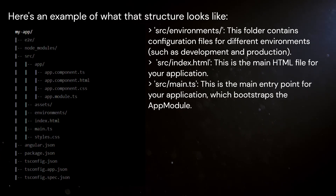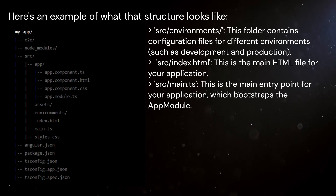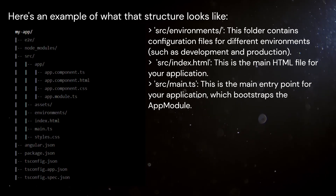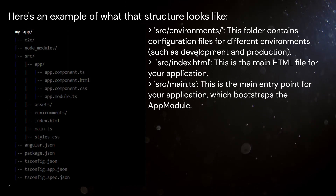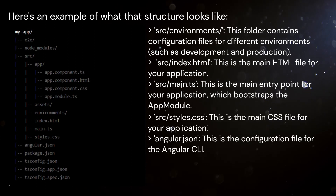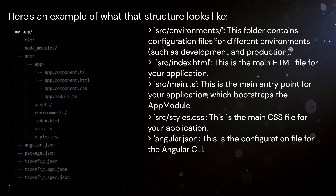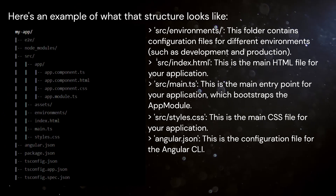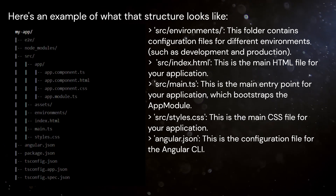SRC/Environments: This folder contains configuration files for different environments, such as development and production. SRC/index.html: This is the main HTML file for your application. SRC/main.ts: This is the main entry point for your application, which bootstraps the app module.